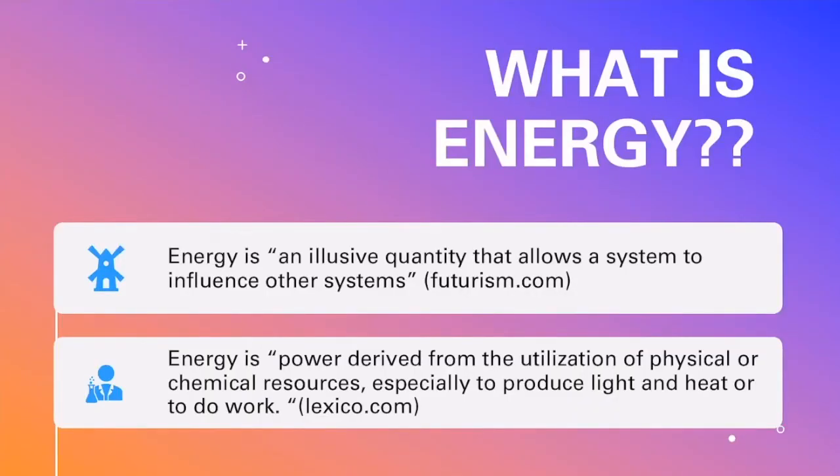So what is energy? This can be a tricky thing to define. There are many different definitions for energy, but the most helpful for us right now are the two on the screen. Energy is an elusive quantity that allows a system to influence other systems, and energy is power derived from the utilization of physical or chemical resources, especially to produce light and heat or to do work. Because energy can't be directly observed, we have to use observation of how energy interacts with different substances in different situations and how it can change from one form to another to help us classify and understand it.